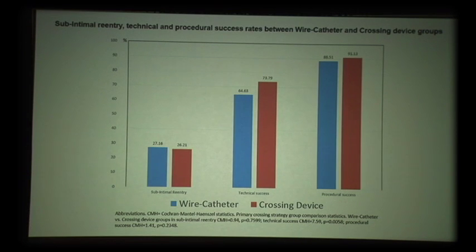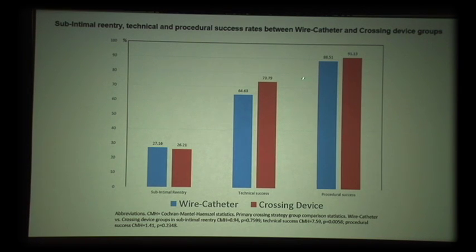Sub-intimal re-entries, technical success, and procedural success were not too far apart. Technical success was higher with the crossing device. However, when technical success was low, the operator was able to bail out and achieve a very high procedural success — irrespective of whether they used a wire catheter or a crossing device. So I think it needs to be tested further.